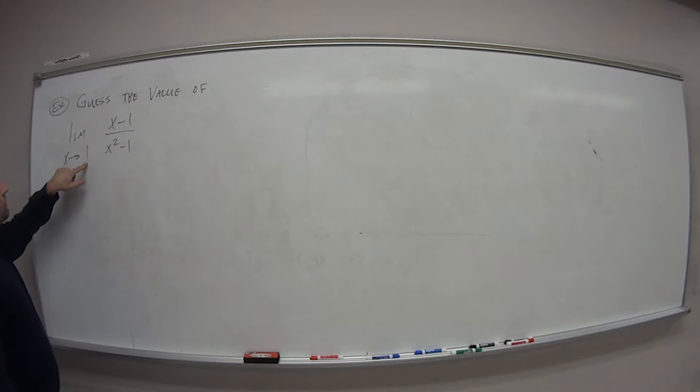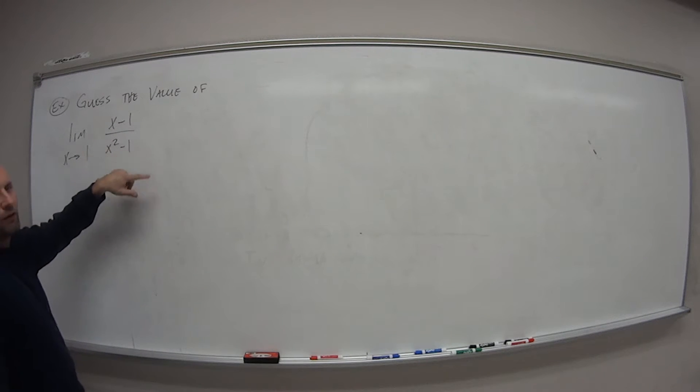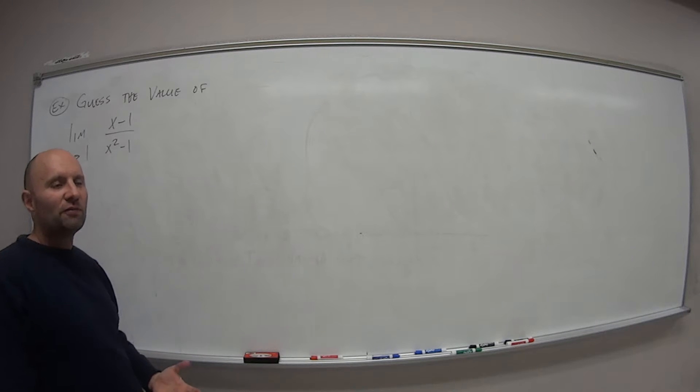I can't just plug in 1 because what happens? If I plug in 1 into the numerator, 1 minus 1 is 0. That's okay. But if I plug it in the denominator, we get 1 squared is 1 minus 1 is 0. It makes this thing undefined.